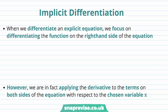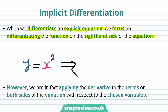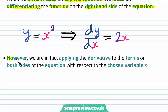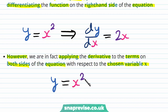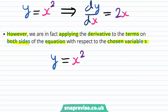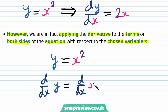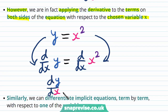So how exactly can we perform implicit differentiation? When we differentiate an explicit equation we focus on differentiating the right hand side. For example, take y = x², giving dy/dx = 2x. However, we are in fact applying the derivative operator to both sides of the equation with respect to x. We take d/dx of y equals d/dx of x², giving dy/dx on the left and 2x on the right.